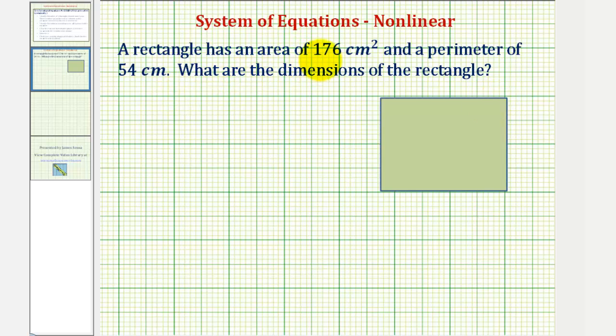A rectangle has an area of 176 square centimeters and a perimeter of 54 centimeters. What are the dimensions of the rectangle?